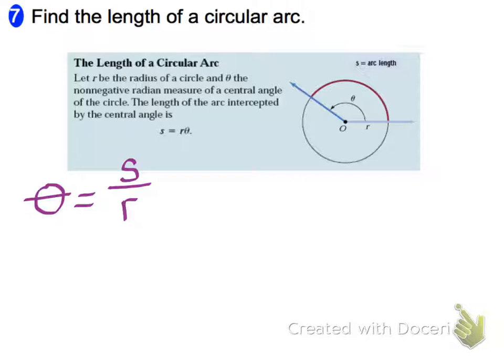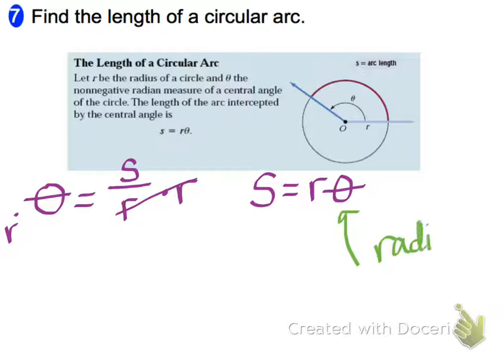Now right now, I want to solve for S. I want a formula for arc length. So if I multiply both sides by the radius, you can see that S, the arc length, is going to be the radius times the angle. Now, a few things to keep in mind. The first would be that the angle needs to be in radians, and the other thing to remember is that R stands for radius.